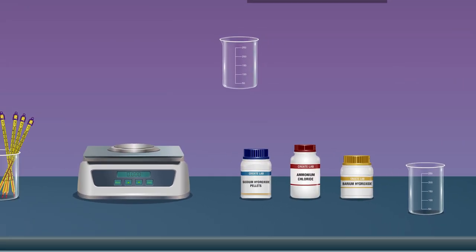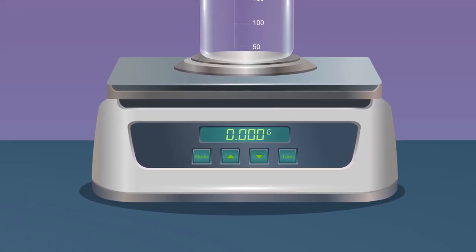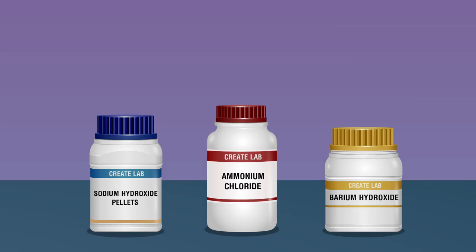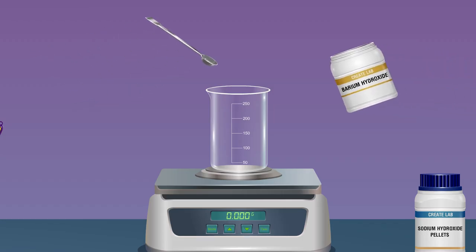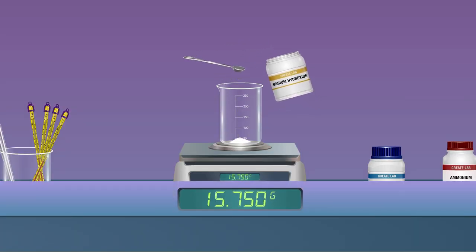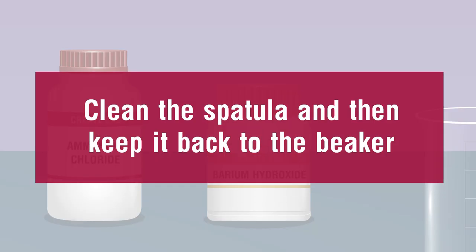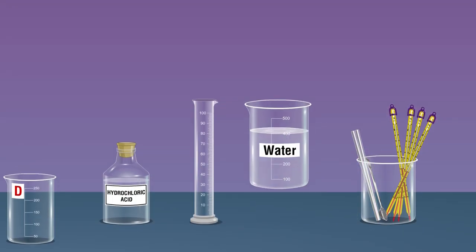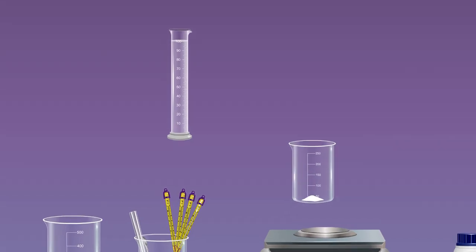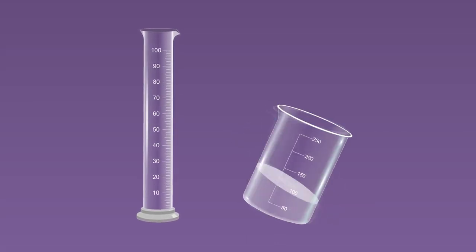Take another 250 ml empty beaker and place it on a weighing balance. Press the tare button on the weighing balance until it shows 0.000 g. Take a spatula and add barium hydroxide into the beaker until the weighing balance shows a reading of 15.75 g. Now add 100 ml of water to the beaker containing barium hydroxide using a measuring cylinder and shake it until the barium hydroxide dissolves.